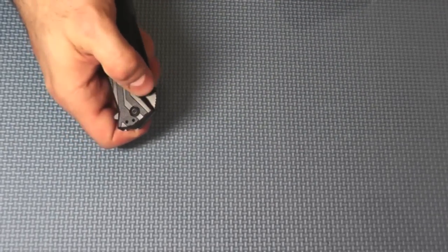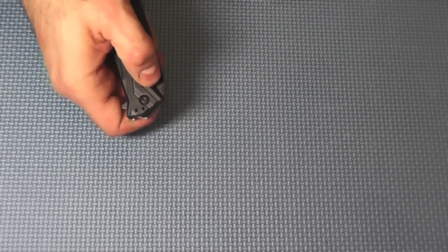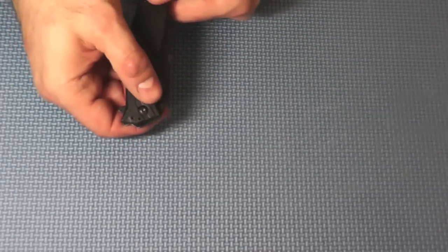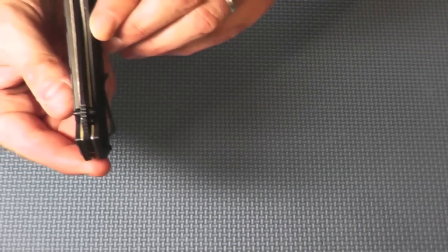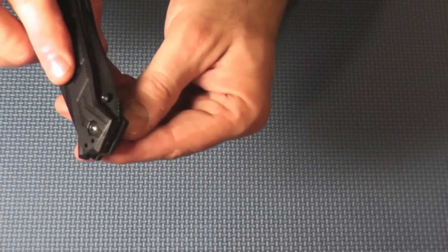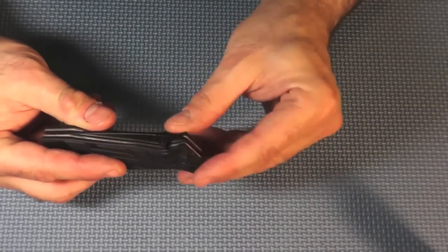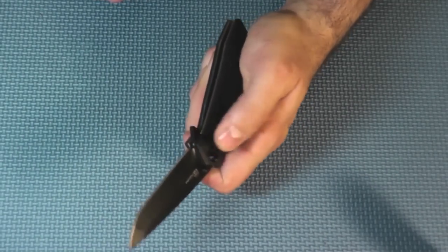Now, you can also deploy it using the thumb studs. Now, the thumb studs, there is a reasonable amount of room between the scales and the thumb stud. But, there could be more. They could have maybe filed this down a little bit, made some sort of place where your thumb could really get behind that thumb stud. But, it's a typical pyramid style thumb stud. And, your finger can get behind there. It's ambidextrous, so either side, either hand, you can deploy it rather quickly.